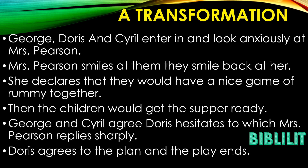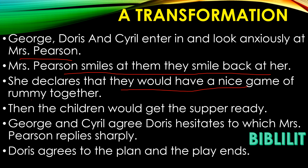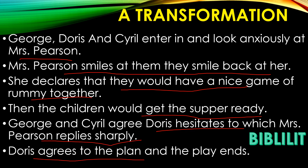George, Doris, and Cyril enter and look anxiously at Mrs. Pearson. Mrs. Pearson smiles at them and they smile back. She declares that they will have a nice game of rummy together, and then the children would go get the supper ready. George and Cyril agree. Doris hesitates, to which Mrs. Pearson replies sharply, and Doris agrees to the plan. By the end of the play, George, Doris, and Cyril are changed because Mrs. Pearson became a strong woman, and when she started to ask for her rights, they had to agree to her terms. Mrs. Pearson, once timid and shy, is now a smart and bold woman getting the respect she always desired.